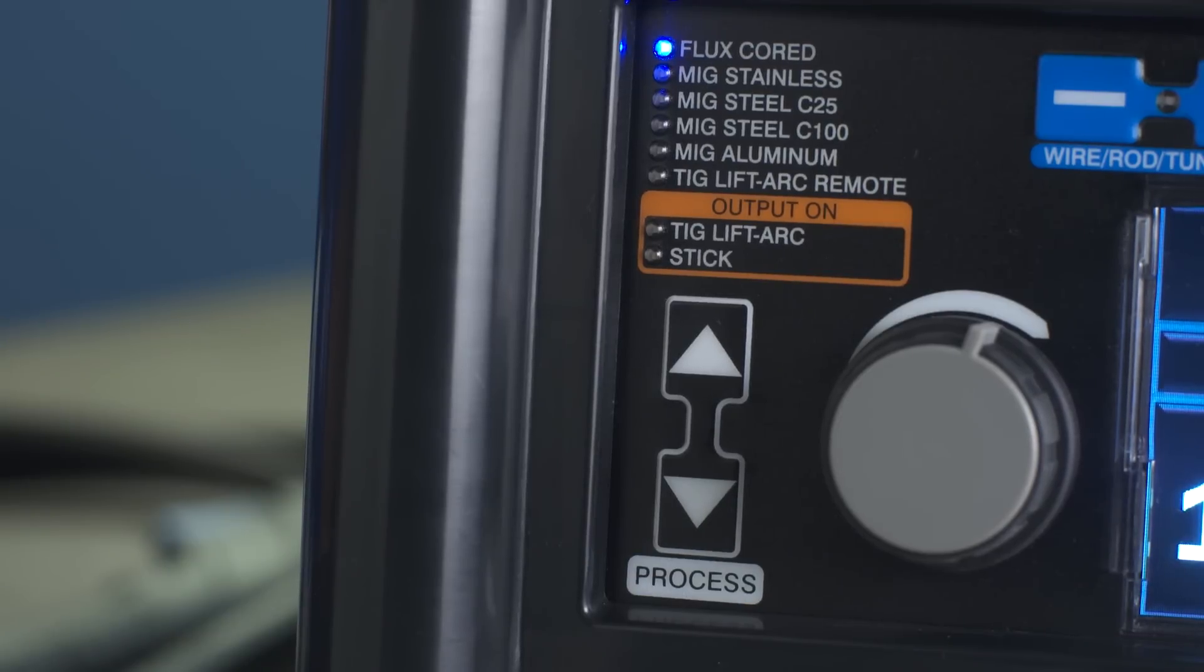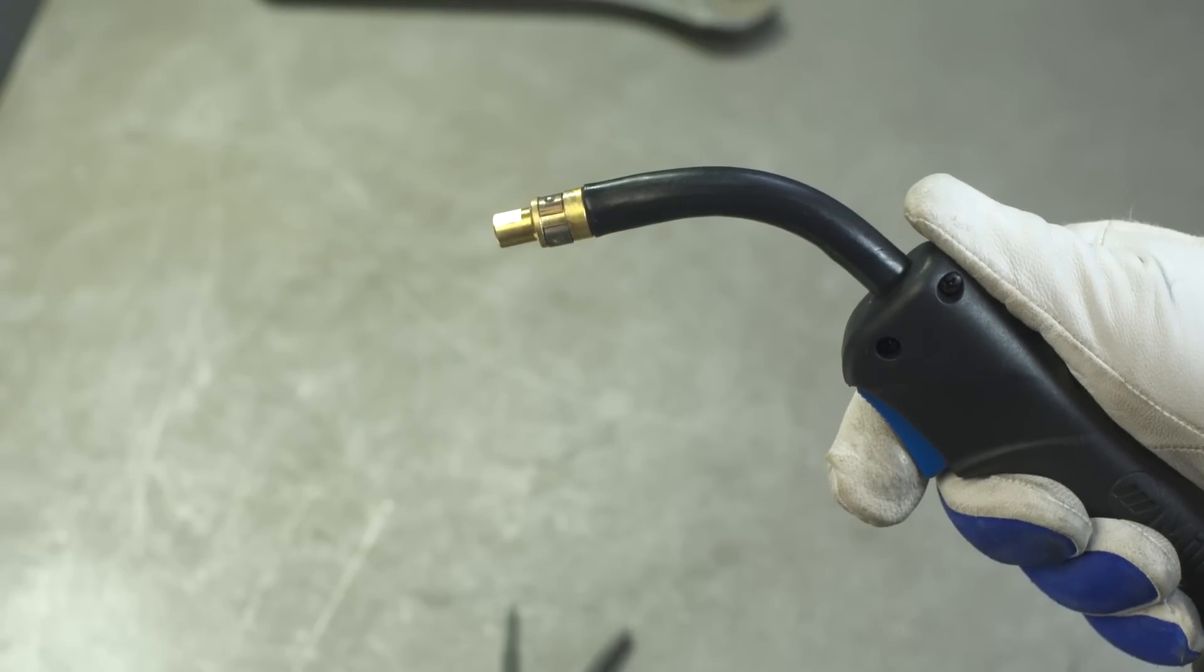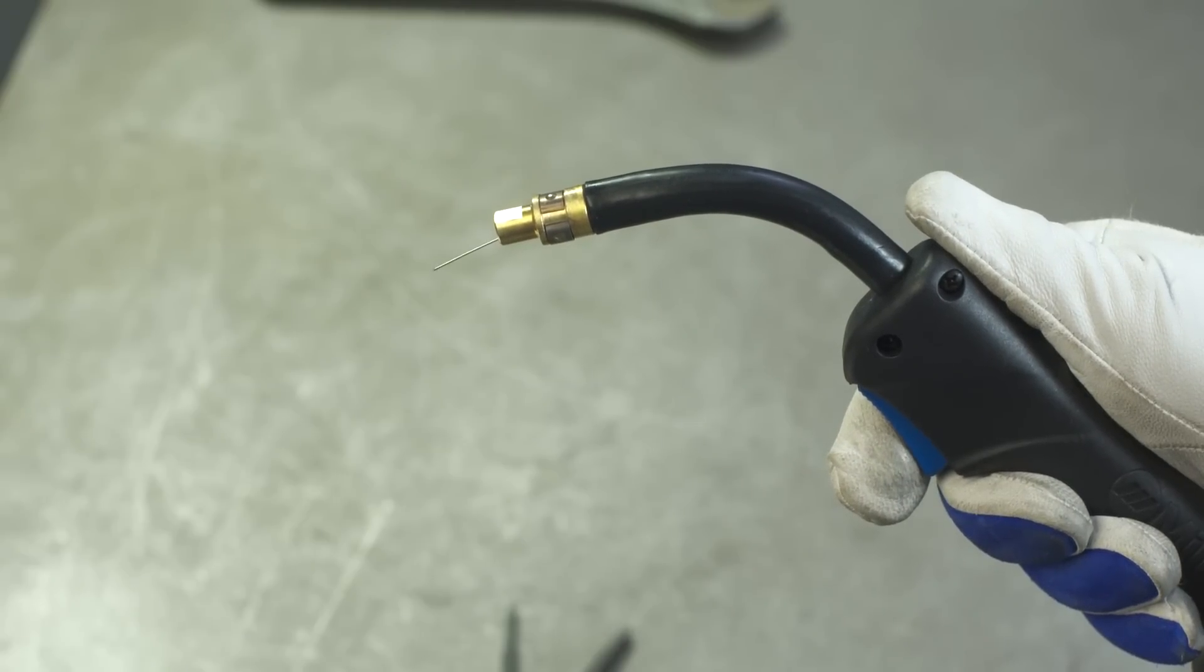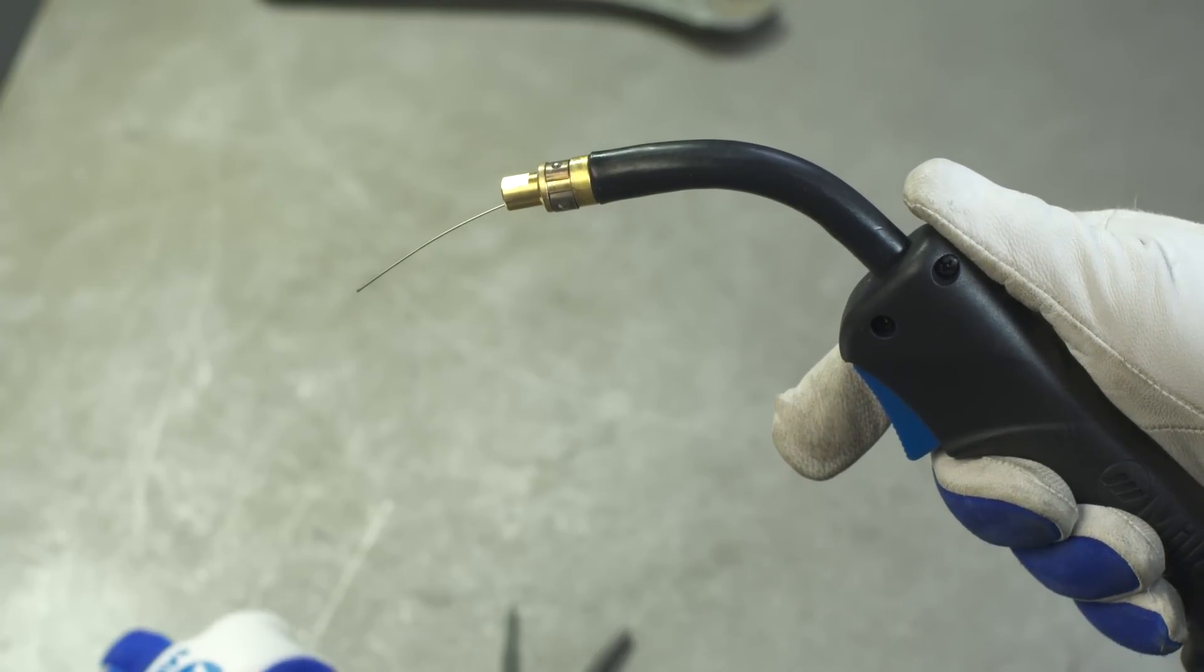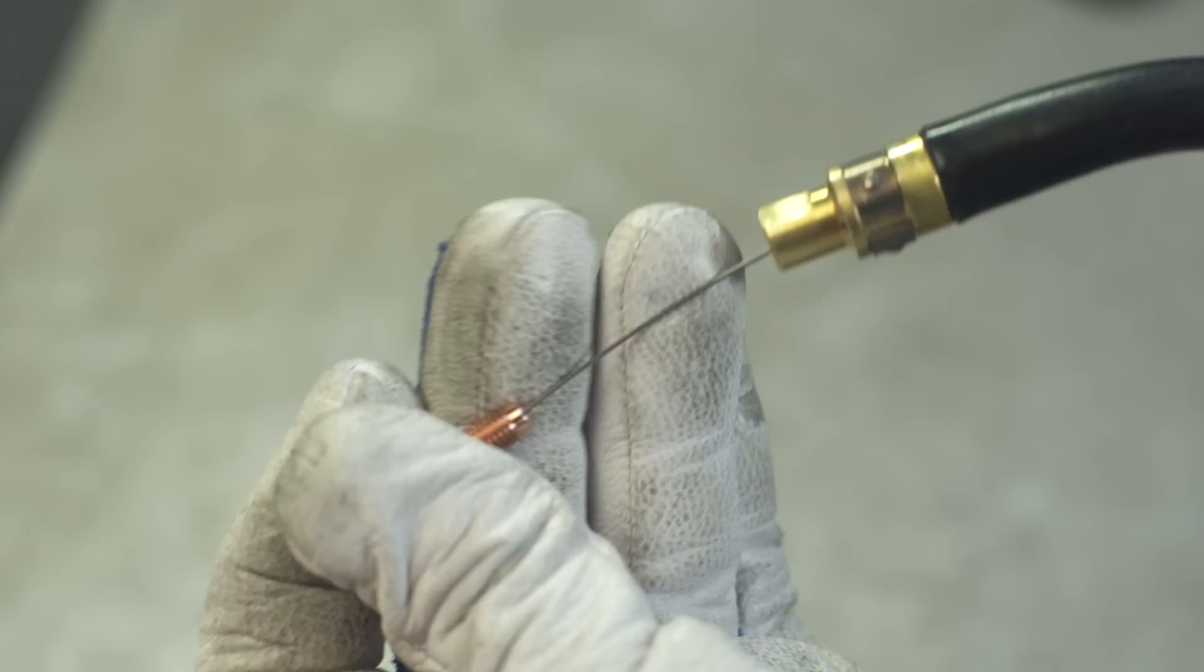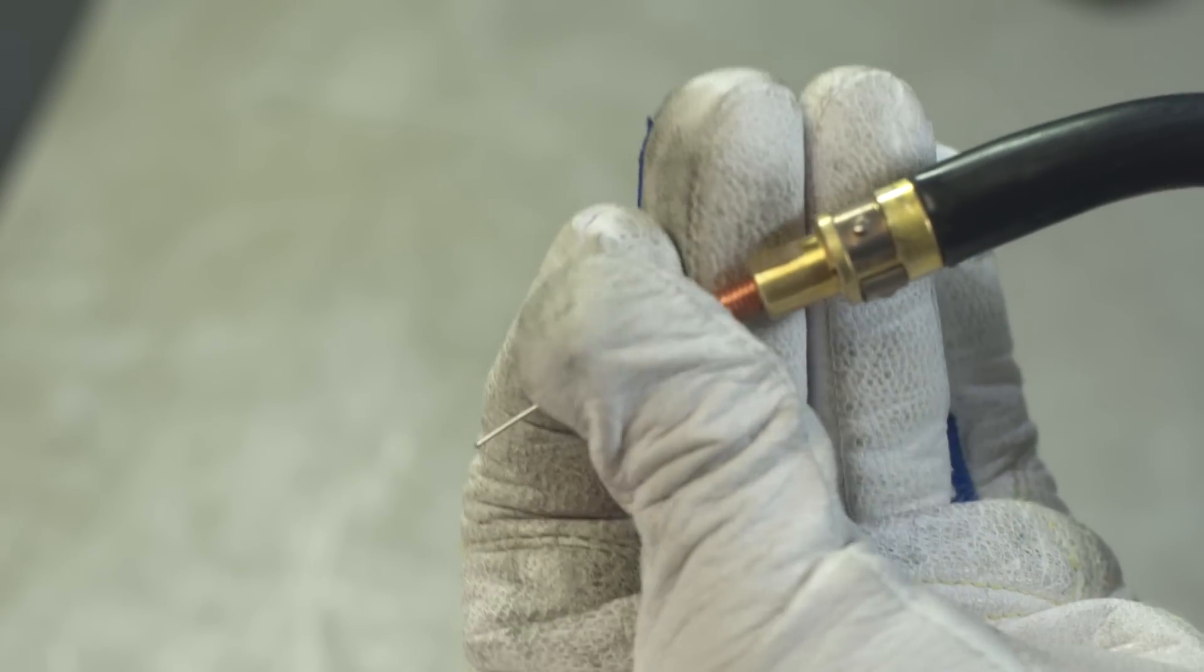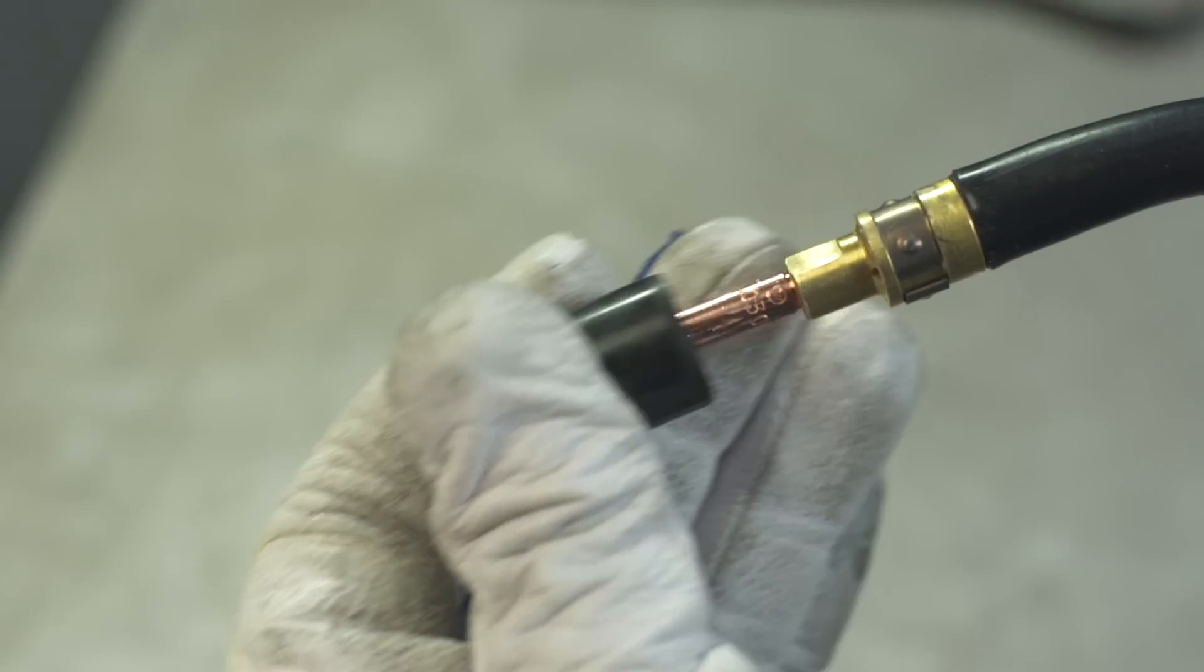Select your process by choosing flux cord on the control panel. Now, hold the gun trigger and continue to feed wire through the gun until a couple of inches of wire feed out past the gasless diffuser. Reinstall the contact tip and install the flux cord nozzle.